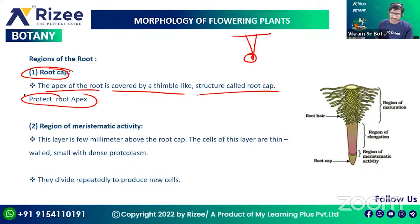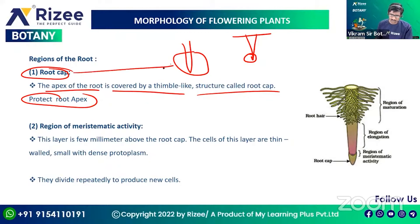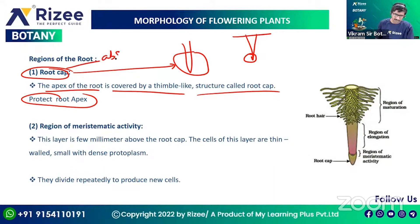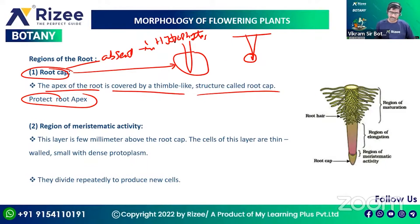The root cap protects the root apex. It is present at the apex of the root to protect that part. Root cap is absent in hydrophytes, and present in all dicot and monocot plants.